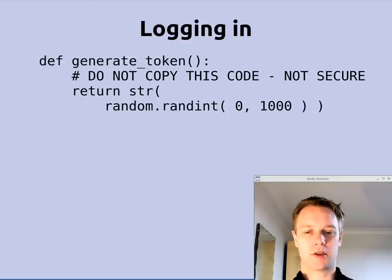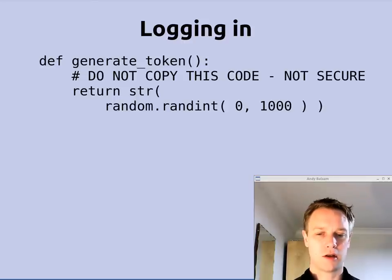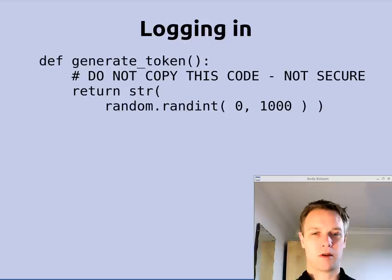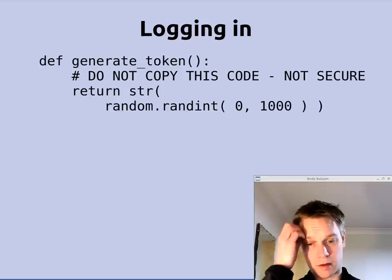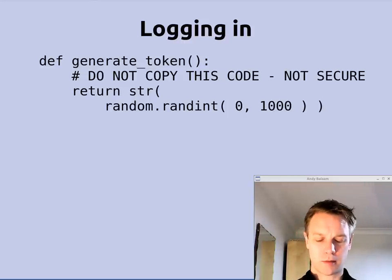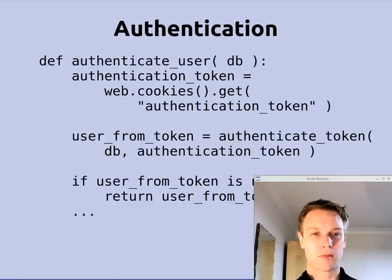We skipped over the generateToken function, so here it is. Unfortunately I'm not going to solve all your problems for you — you need to use a cryptographically secure random number generation function in this generateToken function. I'm very deliberately not attempting to do that in case I get it wrong. I'm making a random number between 0 and 1000 and turning it into a string — you'll need to do something much cleverer than that. If someone tried this a thousand times they would definitely be able to guess your token. So go and read about cryptographically secure random number generators. Don't write one yourself.